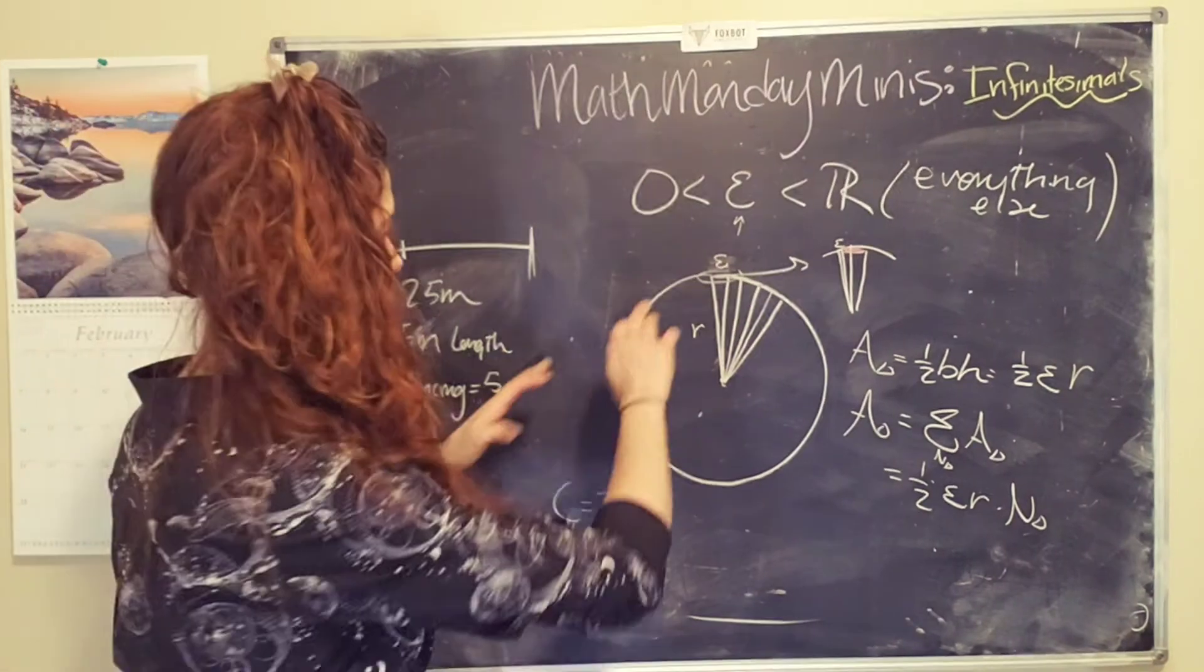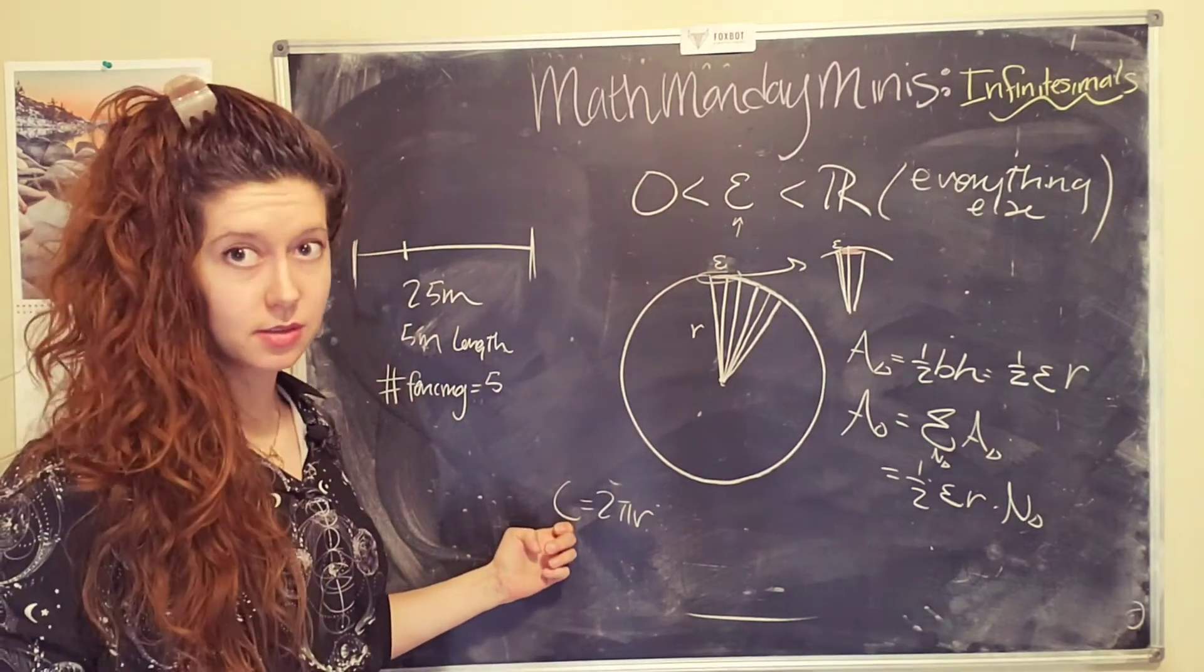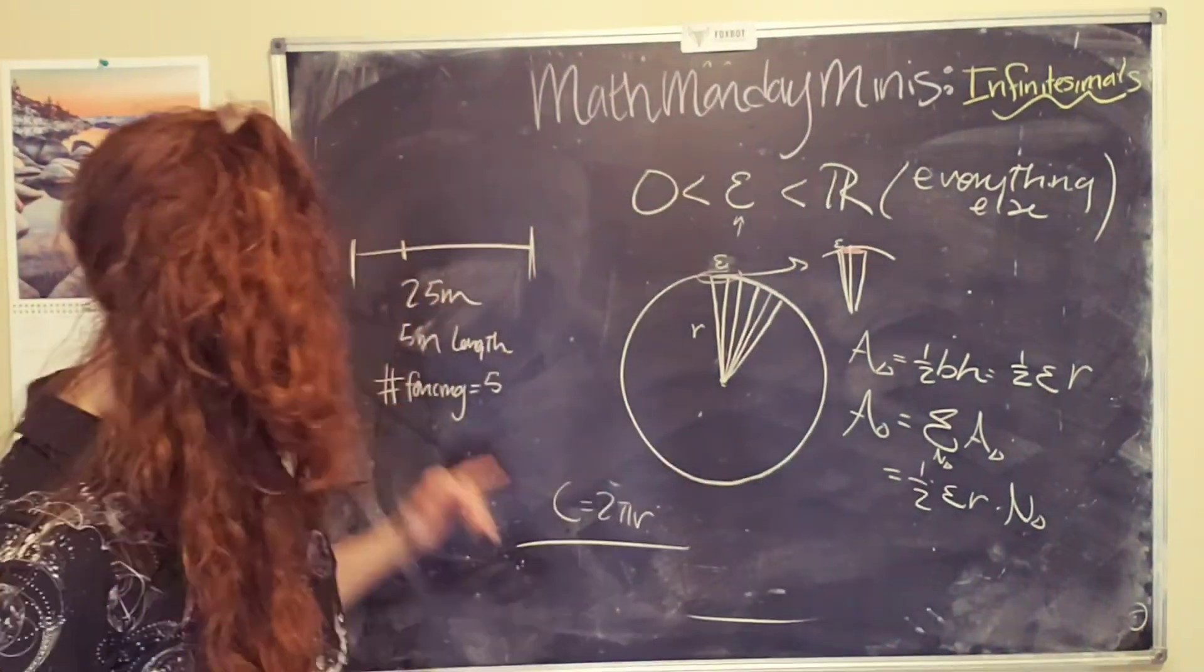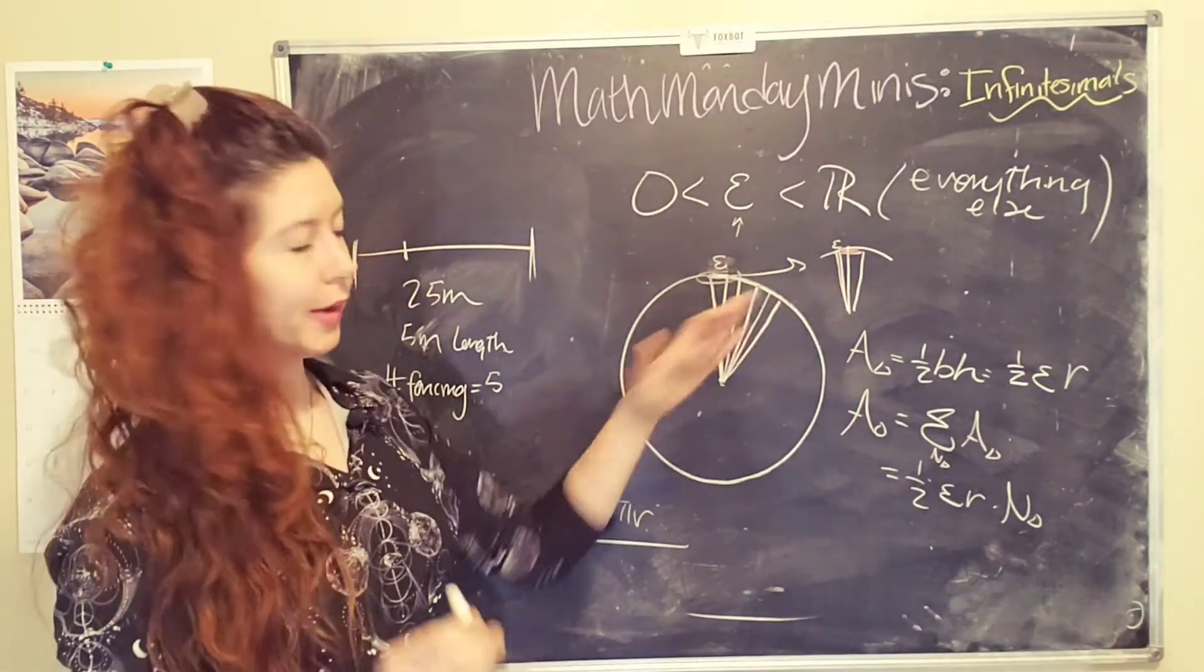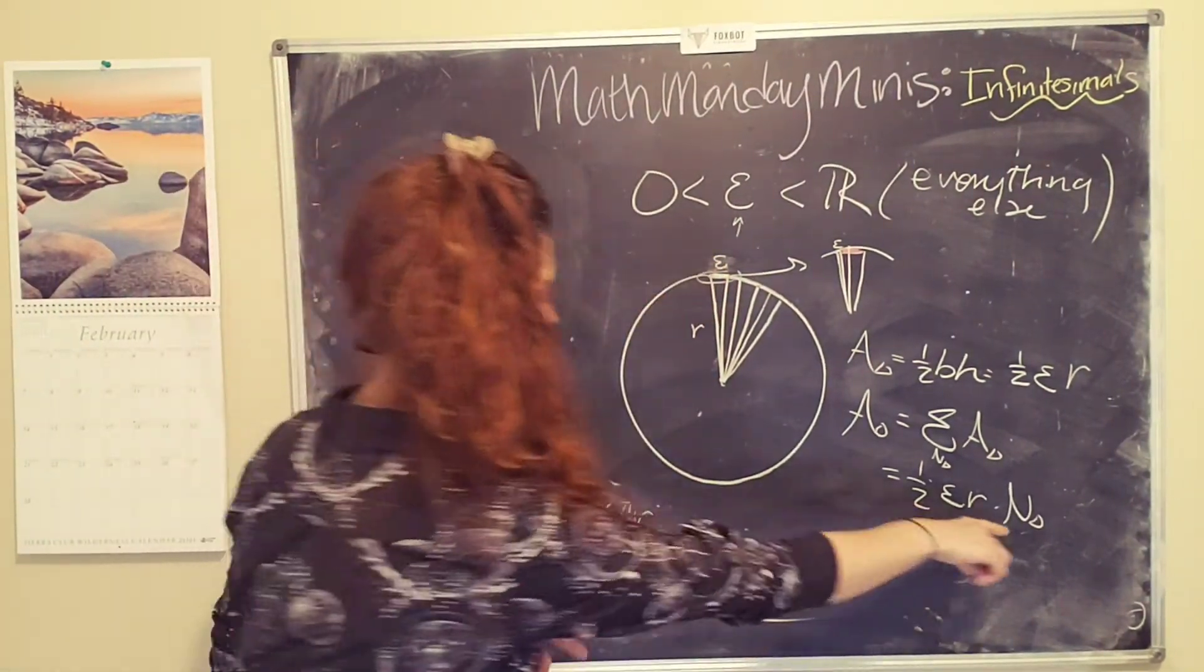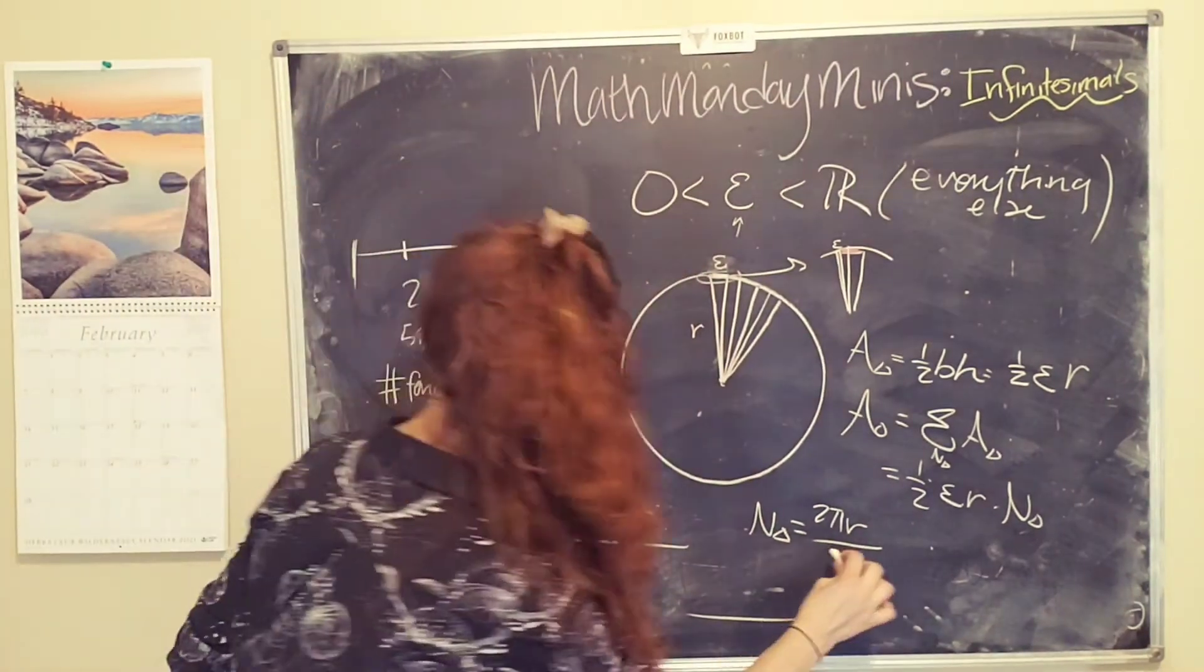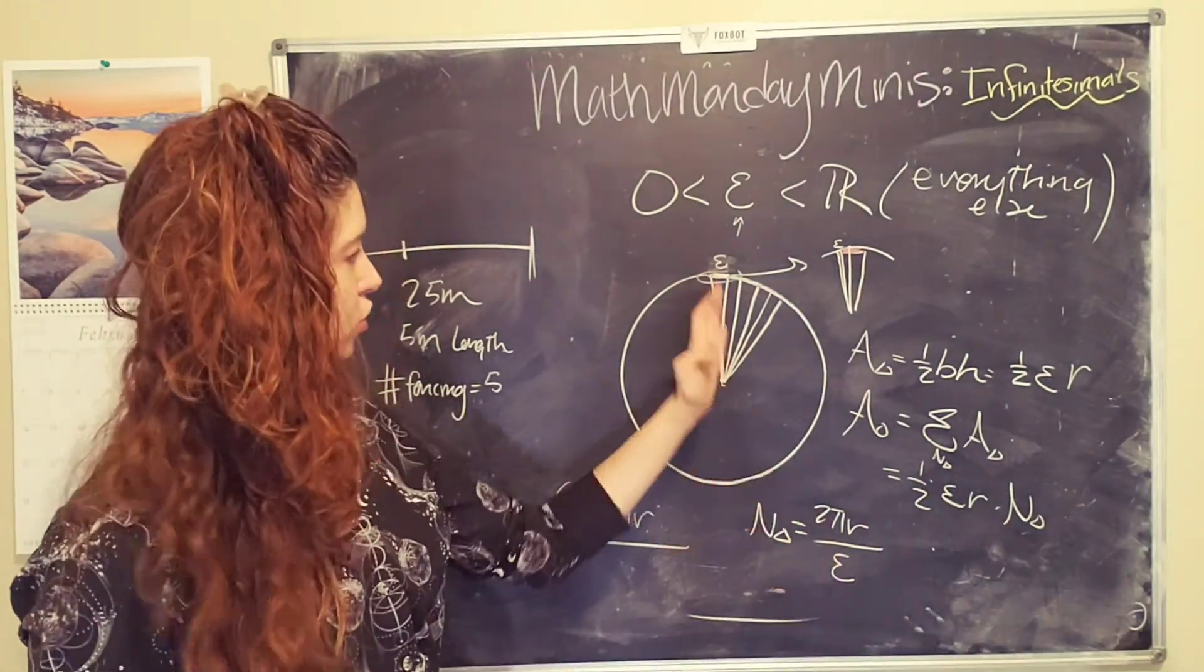So we need to know the length over which we're going and how long our chunks are. Same exact thing here. The length that we're going is the circumference. So this is 2 pi r. That's the length that our triangles are traveling around. And the number is epsilon because it has a distance of epsilon. So for every triangle, it covers a distance of epsilon. And so the number of triangles that we need is the circumference, 2 pi r, divided by the length at which we are able to travel for each of those steps.